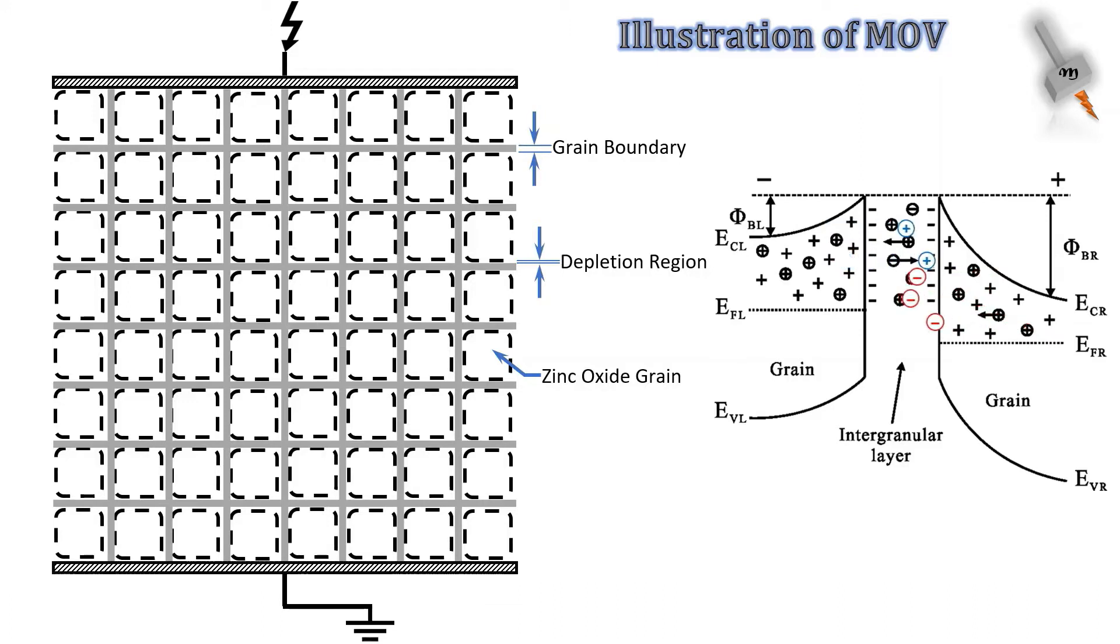At this point, the current increases from the range of microamps to milliamps. A point comes when the applied voltage increases to an extent that the grain boundary breaks down and there is a rapid increase in current. At that point, the current flows from a few amperes to few hundred or few kiloamps.